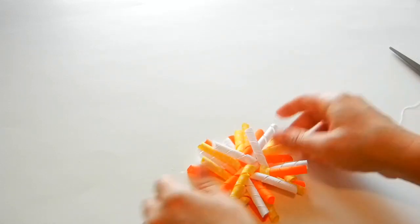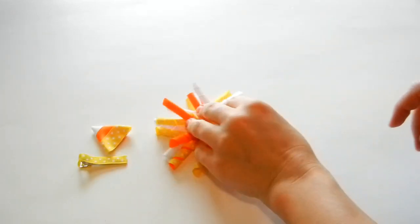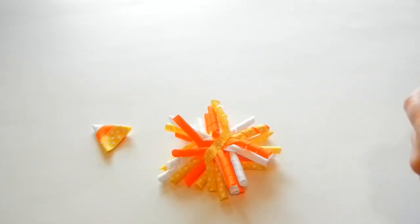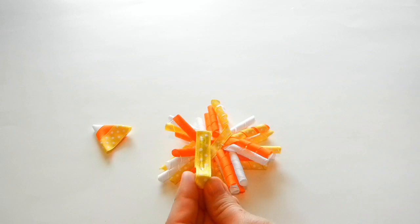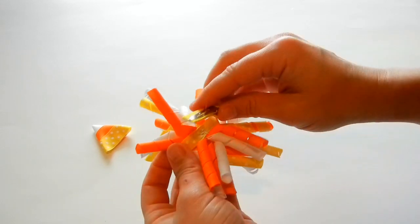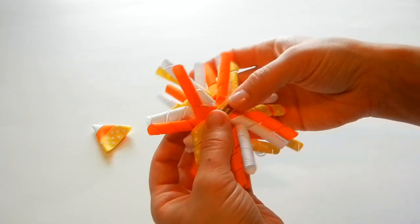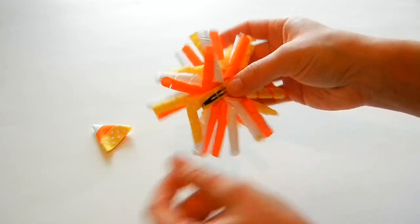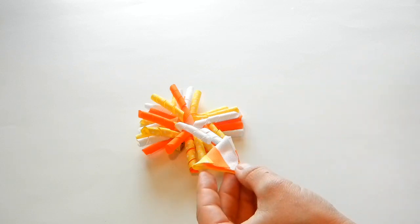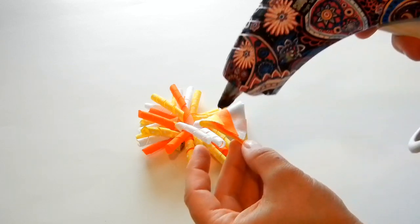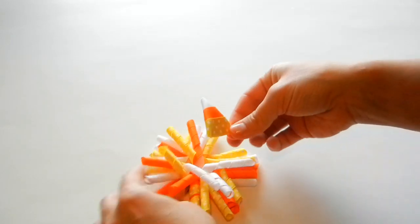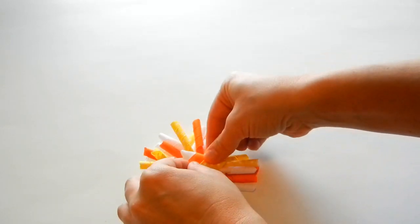Taking your corker, we're going to take the back and add our clip. I'm taking the back of my candy corn, adding hot glue, and place it on.